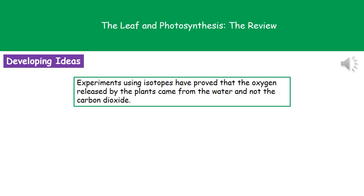The last experiment to understand in the development of ideas on photosynthesis involves the use of isotopes — a form of an element with a different number of neutrons. By carrying out experiments using different isotopes, scientists proved that the oxygen released by plants as a result of photosynthesis comes from the water and not the carbon dioxide. This gives us proof that the oxygen our plants release originally came from the water they took in.